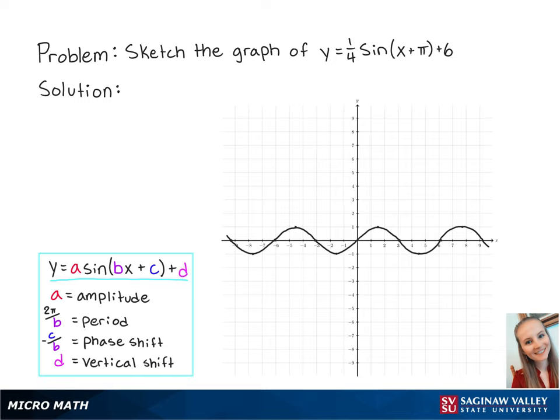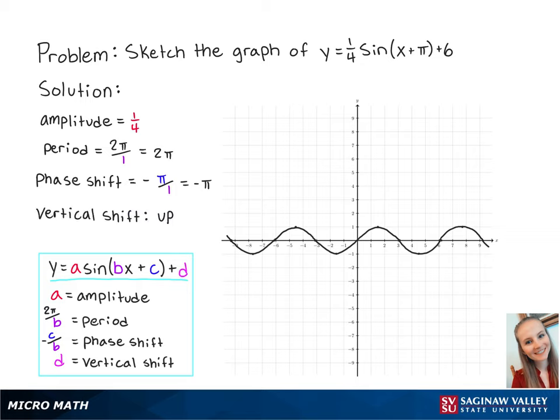Here we have the standard form of a sine equation. For this problem, the amplitude is equal to 1 fourth, the period is equal to 2 pi over 1, which equals 2 pi, the phase shift is equal to negative pi over 1, which equals negative pi, which means that we will be shifting left a distance of pi, and the vertical shift is up 6.